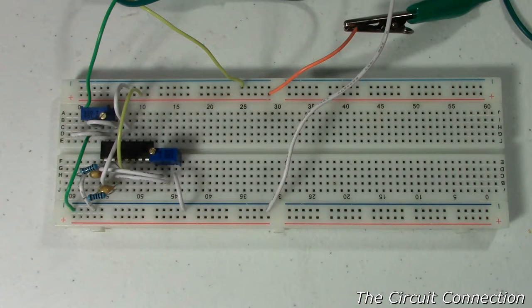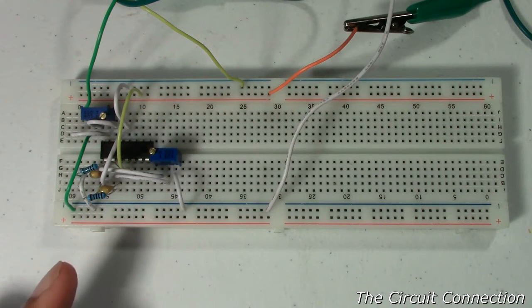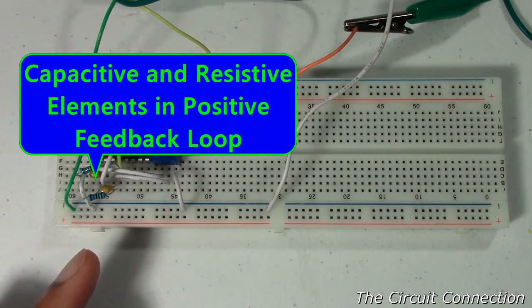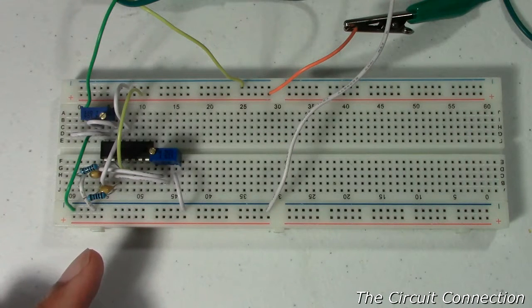You can find a Wien bridge oscillator circuit in a textbook. You'll see that it has capacitive and resistive elements, which is what I have over here, and that's just one path of feedback.